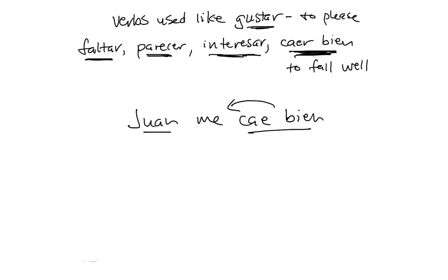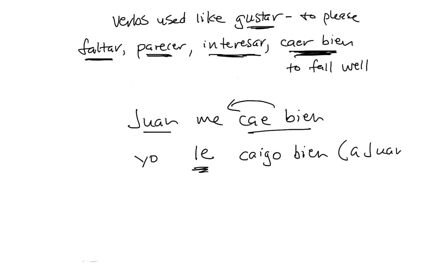What if you want to say 'Juan likes me'? Then you invert it: literally, 'I fall well to Juan.' The yo form of caer is caigo — it's one of those irregular yo forms with a G. So: yo le caigo bien, a Juan. I fall well to him — he likes me. Since le could refer to various people, you reiterate a Juan. For 'they like me,' you say yo les caigo bien, a ellos. For 'you like me,' yo te caigo bien.